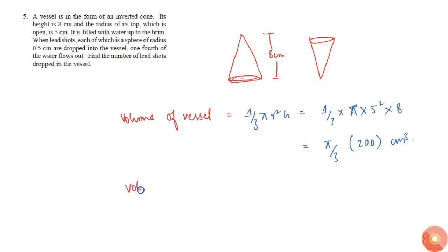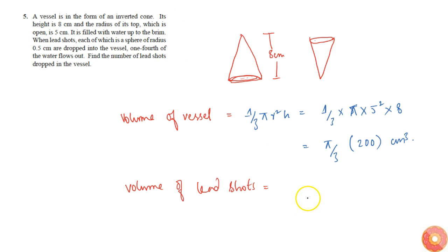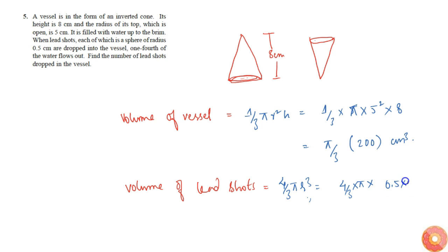Now, the volume of each lead shot. The lead shots are spheres, so the volume of a sphere equals four by three pi r cubed, which equals four by three into pi into 0.5 cubed, that is 0.5 × 0.5 × 0.5.